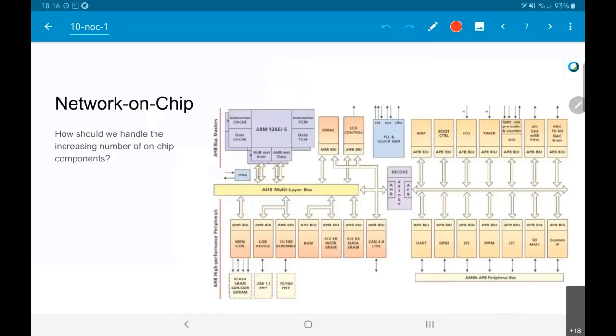This is a picture of a typical modern system on chip. Let us look at what we have over here. First of all, there are multiple CPUs present over here, not just one of them.